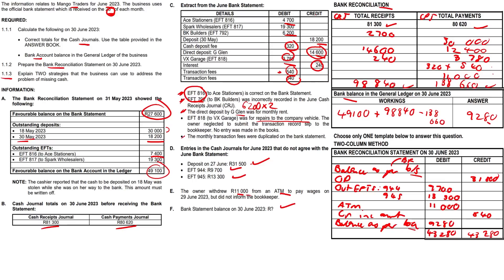We've dealt with pretty much every amount. The R19,300 and R18,200 appear in the outstanding deposits and have already been accounted for. This does not affect question 1.1.1 or 1.1.2. Now for the theory question - our internal control question.